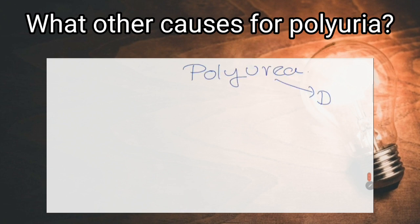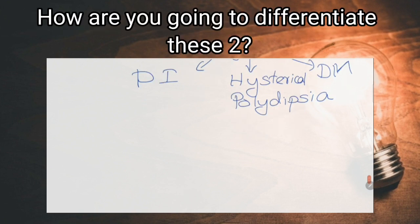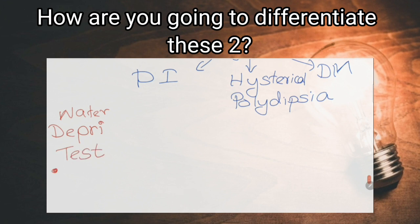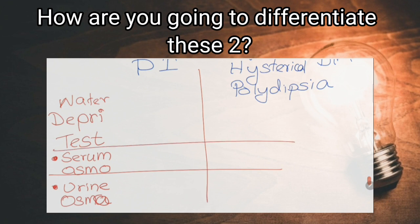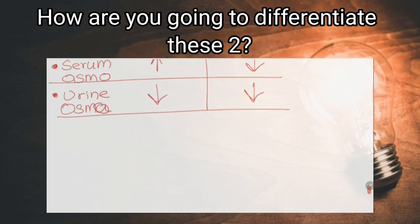What are other causes of polyuria? Diabetes insipidus and hysterical polydipsia. How are you going to differentiate these two? By performing a water deprivation test. If serum osmolarity is more than 300 milliosmol per kilogram and urine osmolarity is less than 600 milliosmol per kilogram after this test, we can diagnose it as diabetes insipidus. But in hysterical polydipsia, both serum osmolality and urine osmolality will decrease.